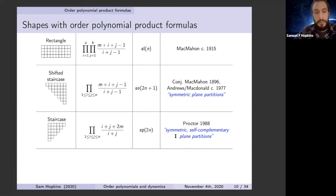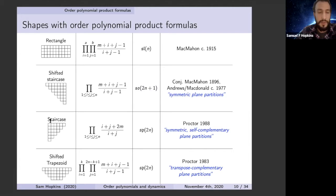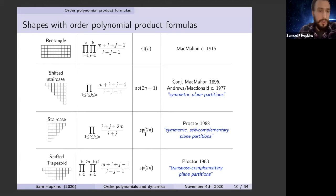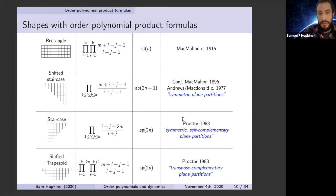Proctor proved nice product formulas for other classes of shapes: the staircase shape and the shifted trapezoid shape, giving product formulas for the number of P-partitions. These correspond to certain symmetry classes of plane partitions and are related to symplectic Lie algebra representations.